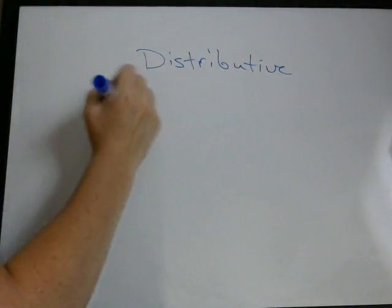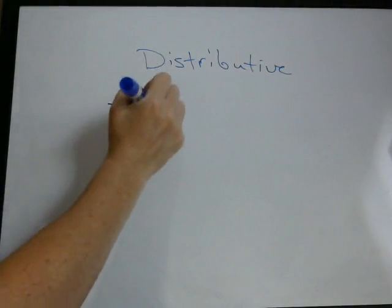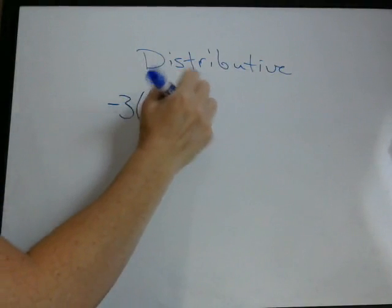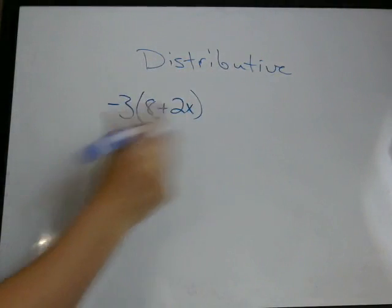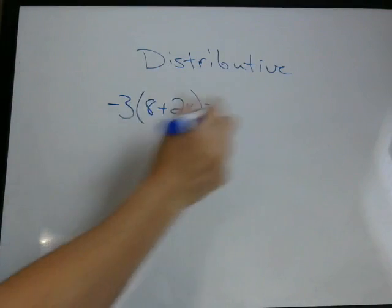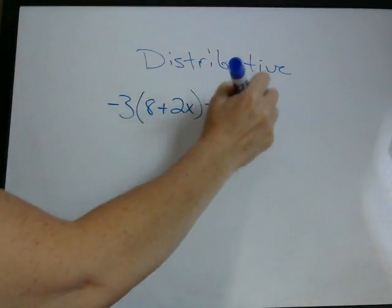We have negative 3 times 8 plus 2x inside the parentheses. Again, we just multiply the first one. Negative 3 times 8. Negative 24.